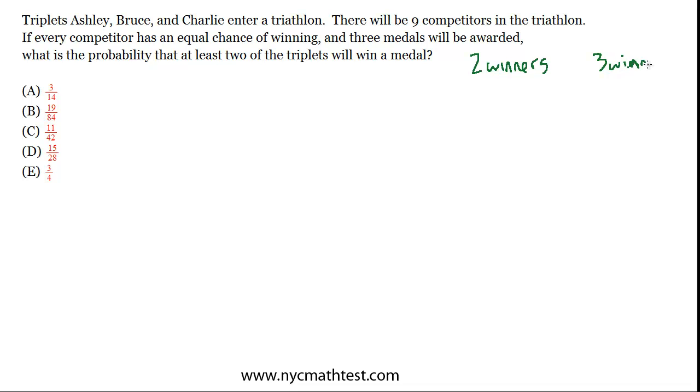I just want to do a little quick brainstorm. We'll come back to this for the actual solution, but how many ways are there to have three winners? It's only one way. It's got to be Ashley, Bruce, and Charlie, and we don't care about the order. It's got to be those three out of nine. So there's really only one way that that can happen.